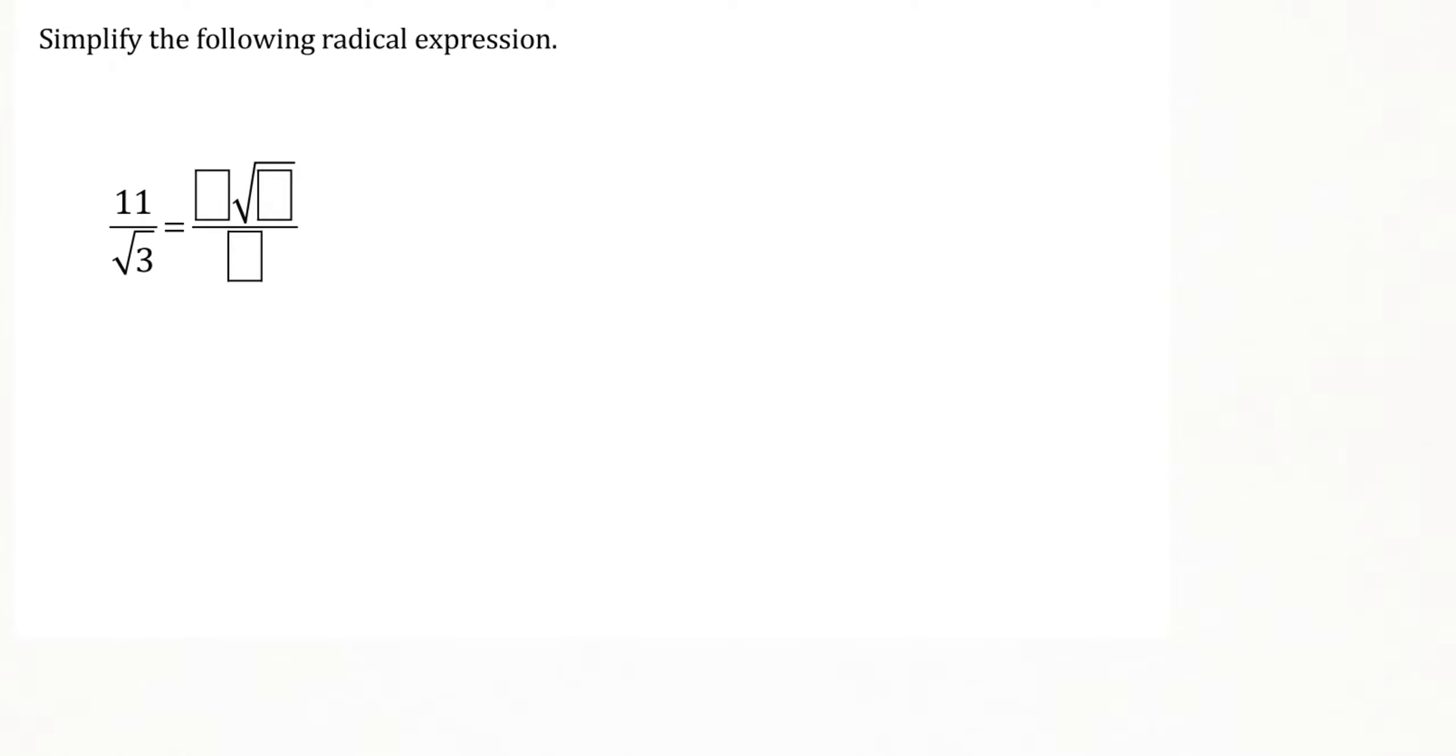The quick answer to this is that every single time you get one of these, this number here is just going to stay right there, and whatever number is under the square root is just going to go into these other two boxes. So that's the quick answer.